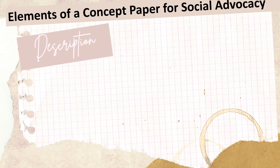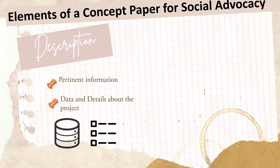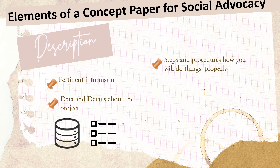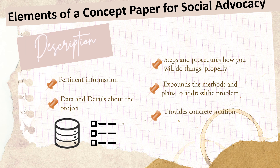The next element is description. This element of concept paper includes all the necessary information, data, and details about your project. This element talks about the steps and procedures and how you will do things properly. It also expounds on the methods and plans and how you will answer the problems of the concept paper and reveal the efficacy of your solution to the problem. This element also involves how you will process your concept paper into a clear technique of production toward a successful project or advocacy.